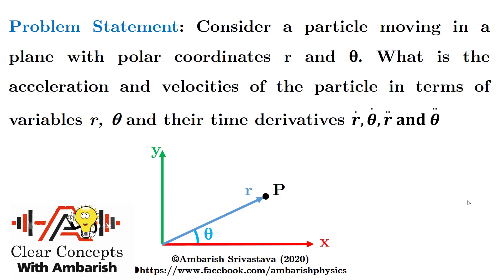Let's see the Coriolis acceleration through a derivation. Consider a particle moving in a plane with polar coordinates r and theta. There's a particle shown whose radial coordinate is r and the angular coordinate is theta. What are the velocity and acceleration of the particle in terms of variables r, theta, and their time derivatives r dot, theta dot, r double dot, and theta double dot?